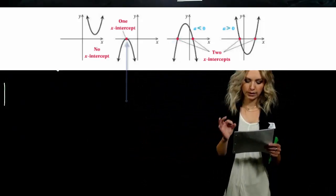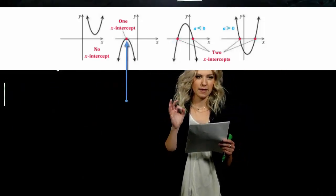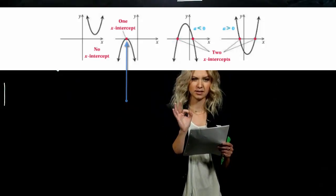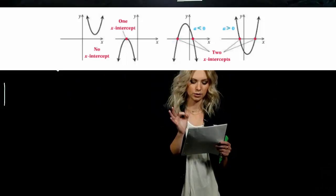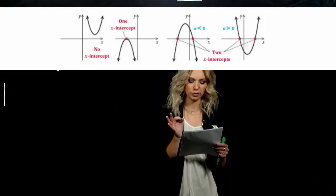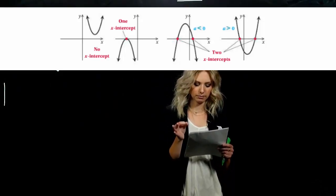If we have only one intercept, that point of the graph is touching the x-axis two times. So that would be a case where we have a perfect square trinomial. It's touching two times right there.